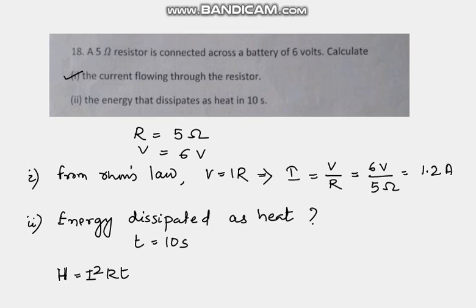Now we have found out here the current is 1.2, so it is I square means 1.2 whole square into the resistance is 5 ohm and the time of current flow is 10 seconds. So if we solve this, we are getting 72, and the unit will be joule. So the energy dissipated as heat is 72 joules.